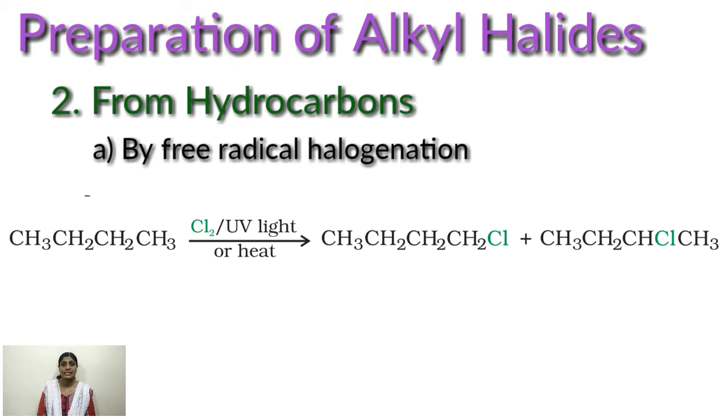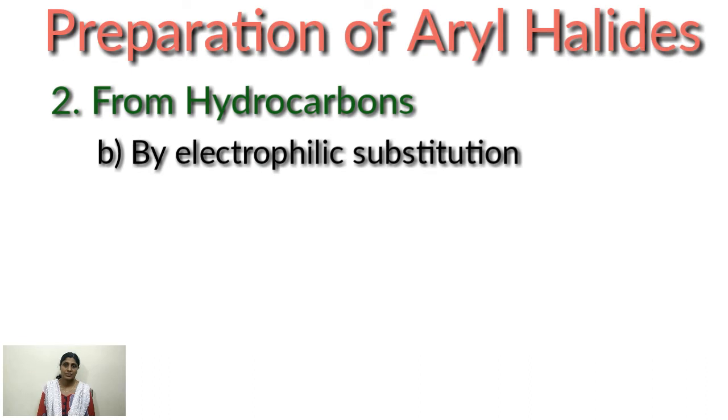The product obtained is very difficult to separate. Example: CH3CH2CH2CH3 on heating with chlorine or exposure to UV light you will get CH3CH2CH2CH2Cl plus CH3CH2CHClCH3. You are getting mixture of these two compounds and it is very difficult to separate out.